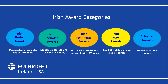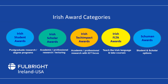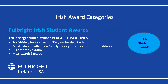Choose your award category. There are five award categories: Irish student awards for postgraduate and degree programmes; scholar awards for academic professional research and/or lecturing; tech impact awards for academic professional research with an ICT focus; FLTA awards to teach the Irish language and take courses; and Schumann awards for students and scholars, run by the Belgian Commission and open to Irish and EU citizens. I'll go through each category in more detail.